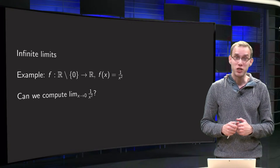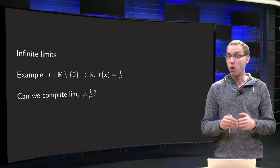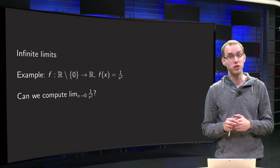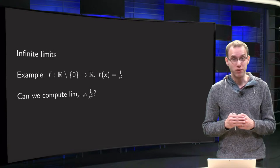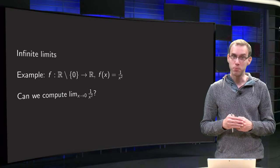A function like 1 over x squared can be defined on all of R except at x equals zero, because at x equals zero we are dividing by zero, which is not possible.